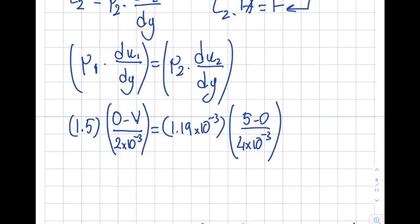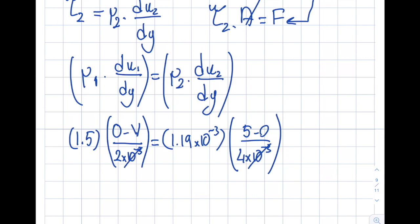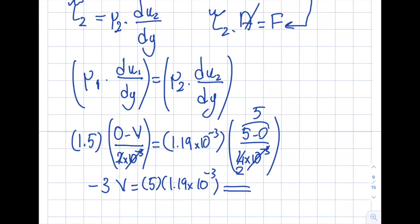So from here, 10 to the minus 3s are gone. So this becomes 5. So this is 4. This is 2. So you can see that this becomes 2. But 2 times that becomes minus 3v will be equal to 5 times 1.19 times 10 to the minus 3. So from here, what you're going to get is v is equal to minus 2 times 10 to the minus 3 meter per second.